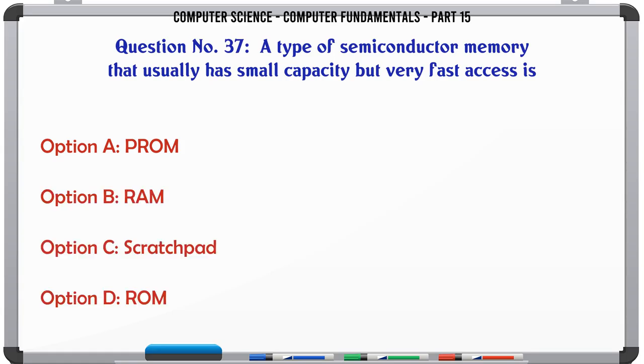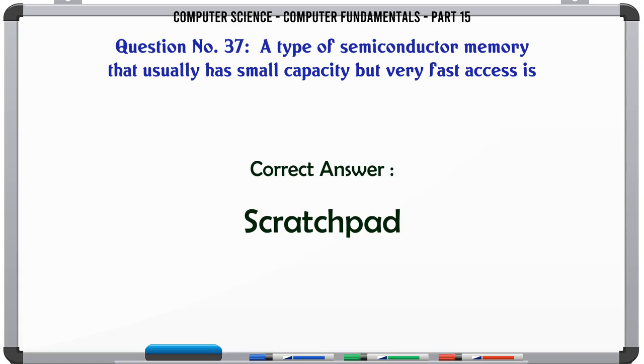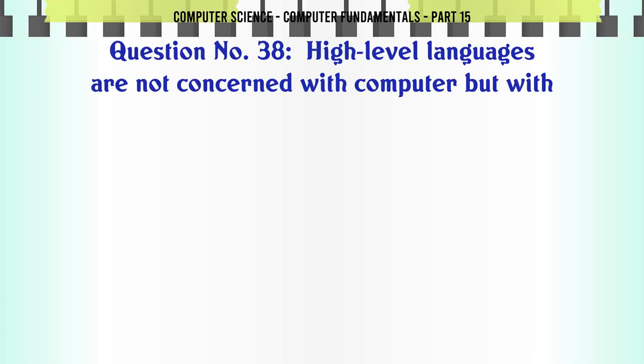A type of semiconductor memory that usually has small capacity but very fast access is: A. PROM B. RAM C. Scratchpad D. ROM. The correct answer is Scratchpad.